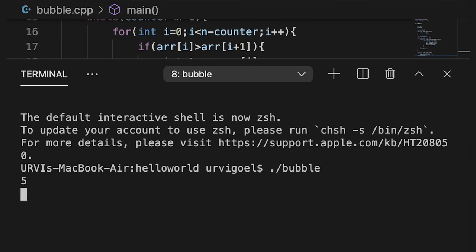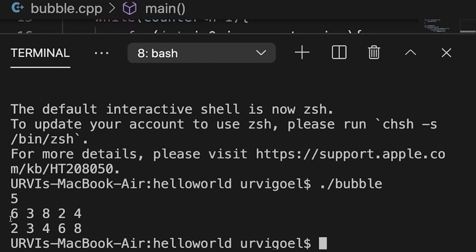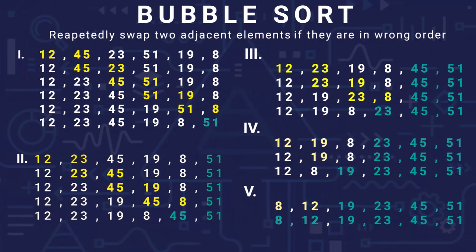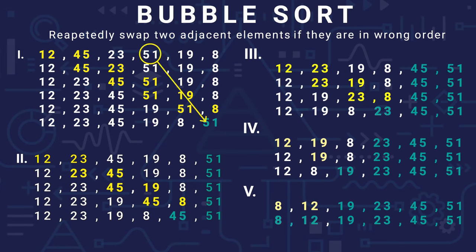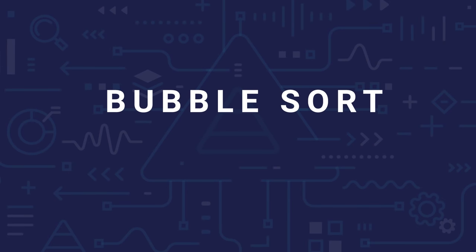If we add some random five elements we will get our sorted array. This was bubble sort. We call it bubble sort because the maximum element 'bubbles up' to the top. In our unsorted array, 51 was the max so it bubbled up first, then 45, then 23, then 19, then 12, and 8 was already in the first position. That's why we call it bubble sort. Thank you, see you in the next video.